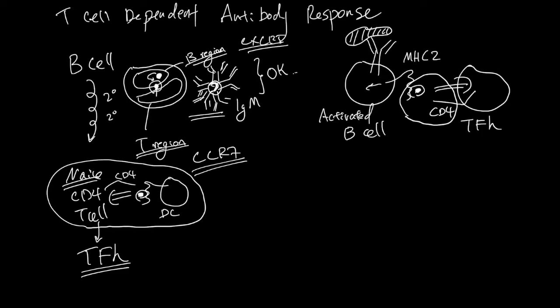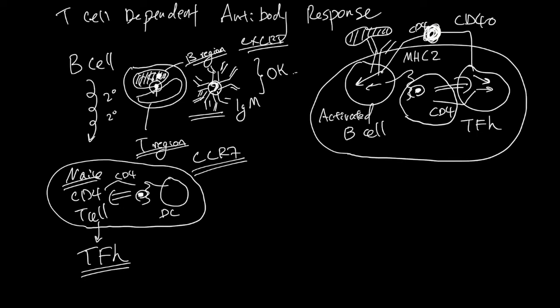The T follicular helper cell will make CD40 ligand and then the activated B cell will make CD40. CD40 activation is going to send even more signal, and this bound activated B cell and the T follicular helper cell will now move back in this B region. This activated B cell can now make its antibody IgM by default better.